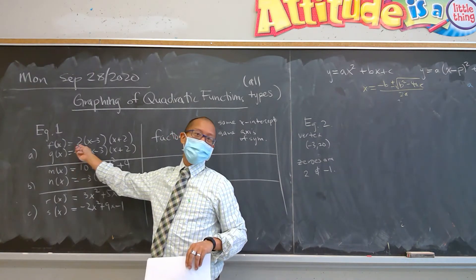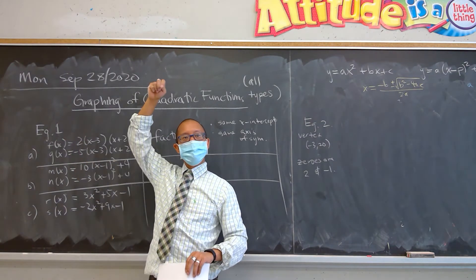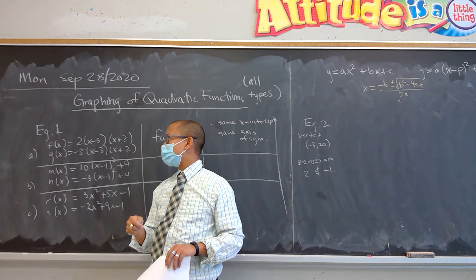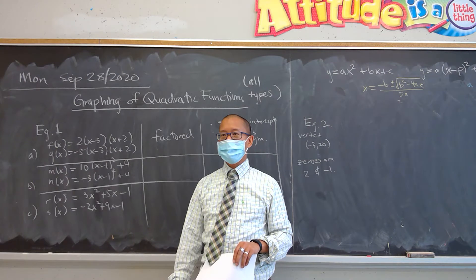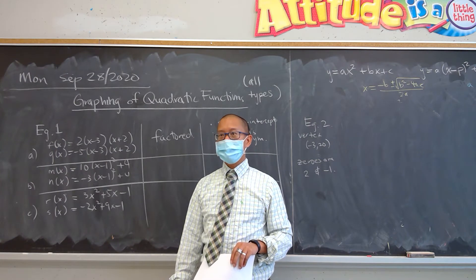In grade 10, we're going to say it's vertically stretched by a factor of 2. And how about this one? Negative 5. Emma? It's vertically stretched by a factor of 5 and reflected in the x-axis.